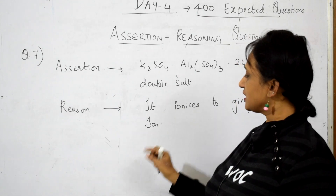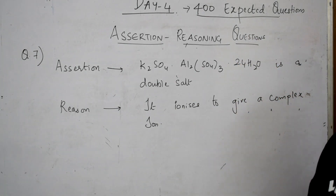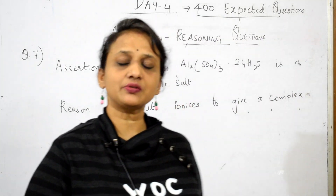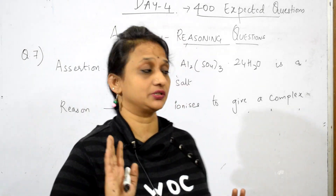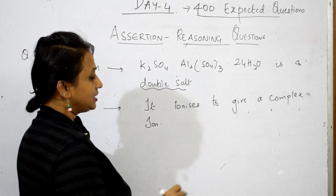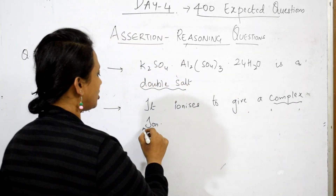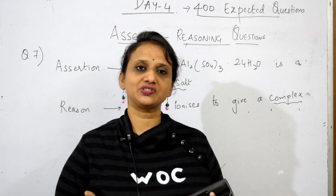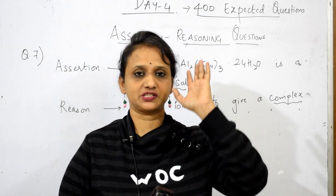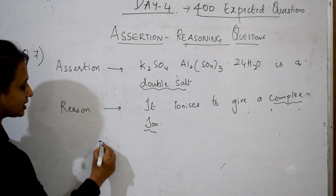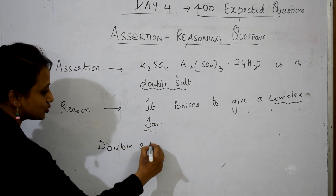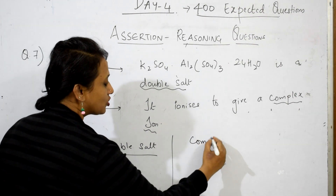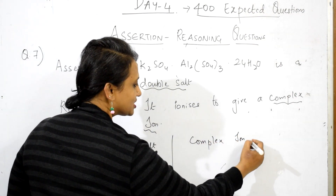The reason given is: it ionizes to give a complex ion. We basically have four options A, B, C, D. Now check carefully — once the question is given to you, read it carefully. Here they have given the concept of double salt, and here the concept of complex ion. Which chapter is this, students? It is basically your coordination compounds chapter. So always remember: once an assertion reasoning question comes, go directly to the concept.